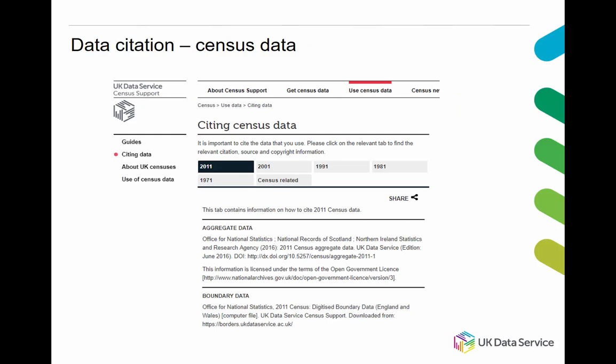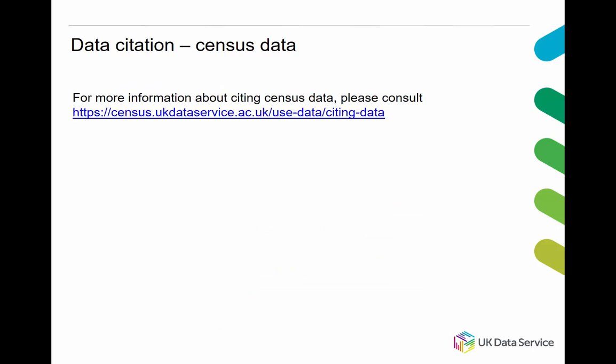Citations for census data are given on the UK Data Service census support web pages. The citation is given, as always, in a format ready for you to use and based on the APA format. There are more details about citing census data on the census pages of the UK Data Service, and the link is given here.